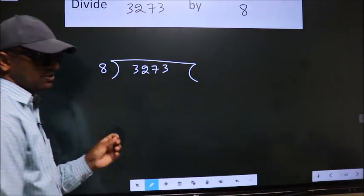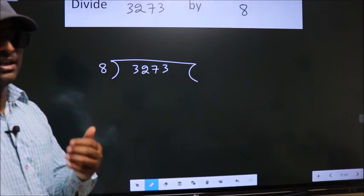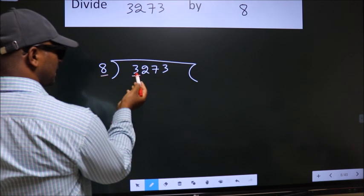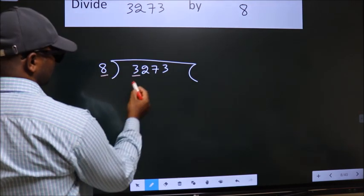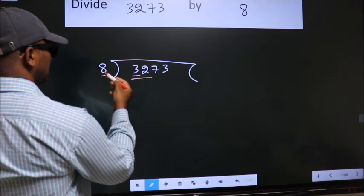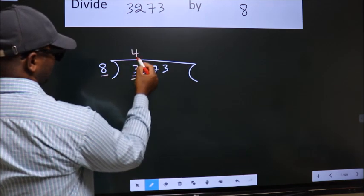This is your step 1. Next, here we have 3, here 8. 3 is smaller than 8, so we should take two numbers, 32. When do we get 32 in the 8 table? 8 fours 32.